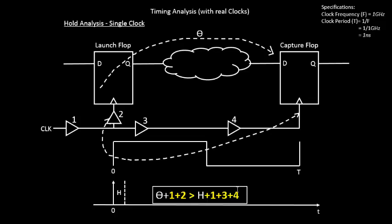It's a very simple equation compared to the previous ones that we have seen. So what we'll do is, this 1 plus 2 we'll be calling it as delta 1, which is the launch clock network delay, and 1 plus 3 plus 4 we'll be calling as delta 2, which is capture clock network delay.